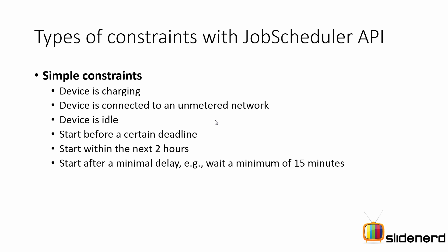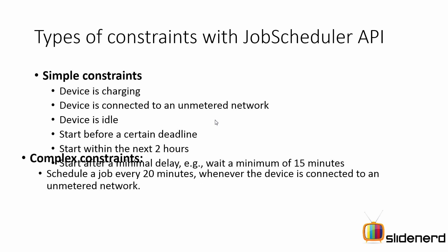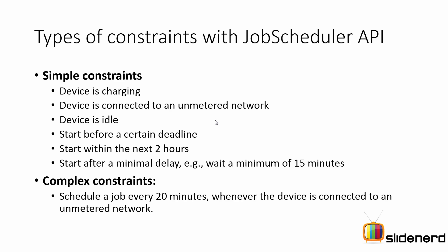Simple constraints include: run a job only when the device is charging, only when the user is on an unmetered network, when the device is idle, or within a specific time window — say start before one hour, start within the next two hours, or wait 10 minutes and then start. Complex constraints let you combine all of these together — for example, schedule a job every 20 minutes when the device is connected to an unmetered network and Wi-Fi is available. This makes your Job Scheduler really smart about processing background tasks.